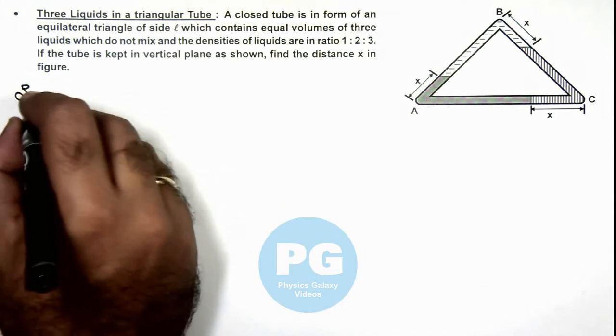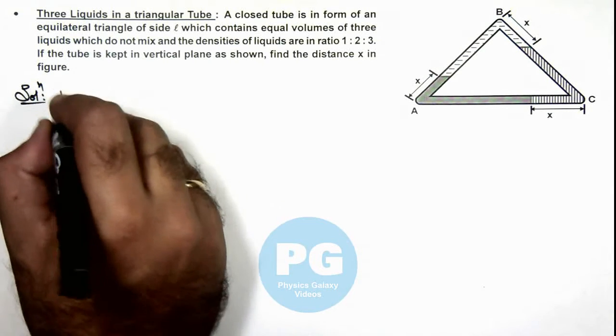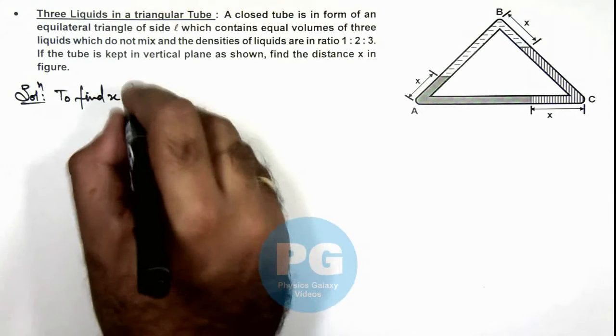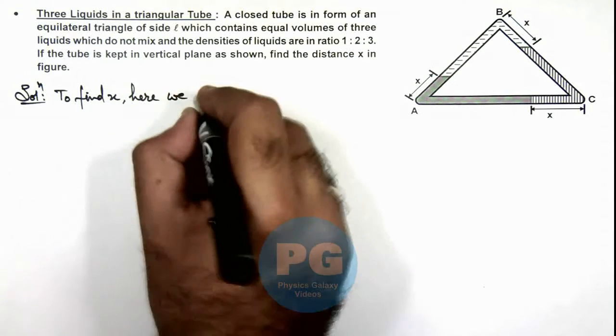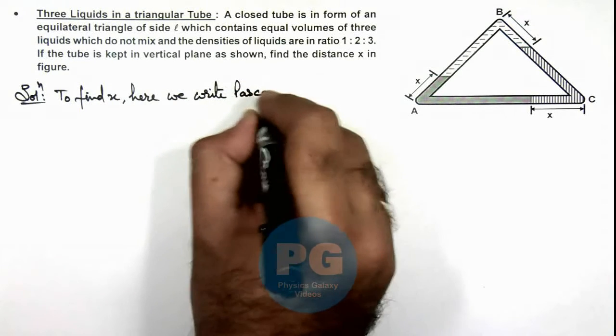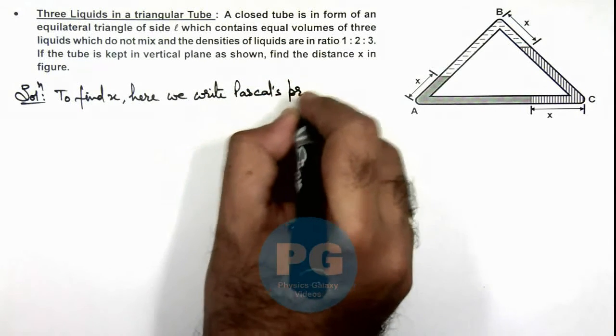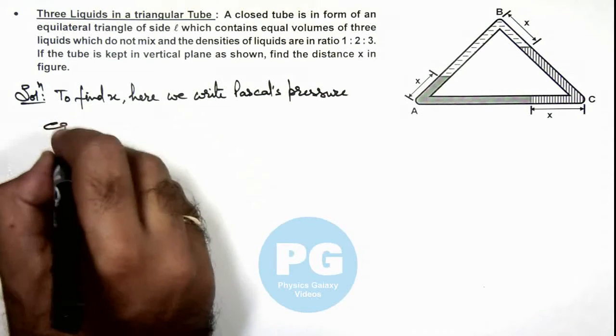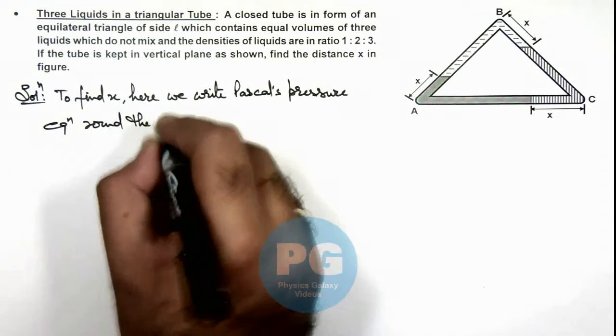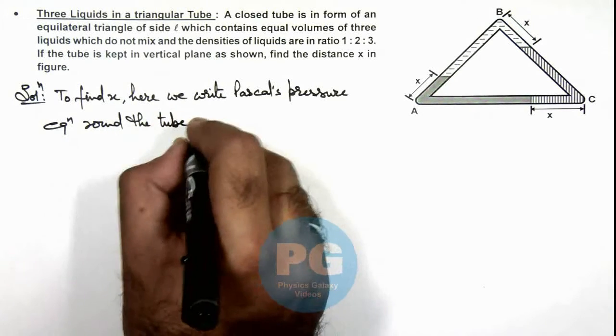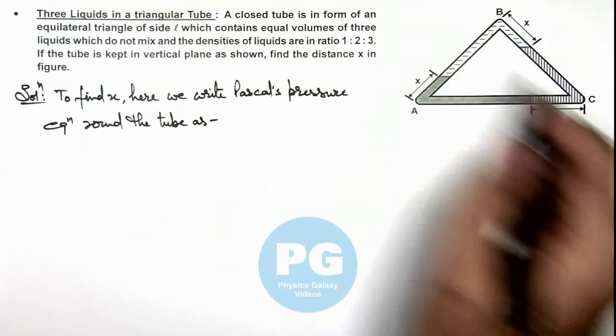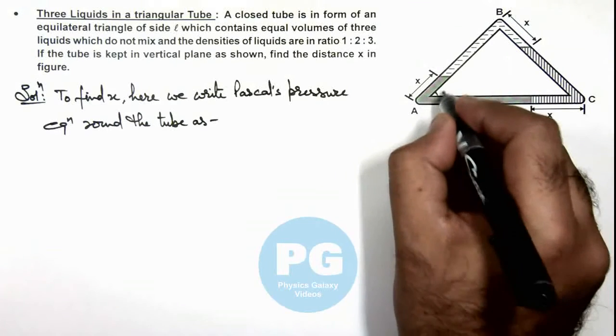To find x, we write Pascal's pressure equation around the tube. In this situation, as this is an equilateral triangle, these angles are all 60 degrees.